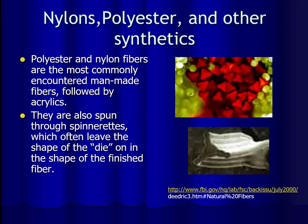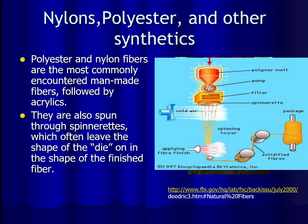In a factory, the liquid polymer is pumped through a spinneret with a specific shape that determines the shape of the fiber. It's then blasted with cold air in order to solidify it and can be spun onto a spindle to be packaged and used.